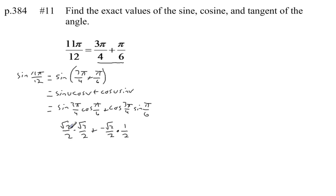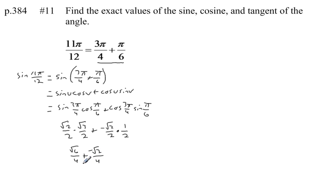Let's simplify these fractions. √2 times √3 is √6 over 4, plus negative √2 times 1 is −√2, and 2 times 2 is 4. So we can write this as (√6 − √2) / 4. That's the exact answer for the sine of 11π/12.